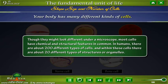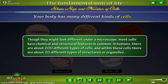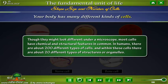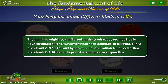Though they might look different under a microscope, most cells have chemical and structural features in common. In humans, there are about 200 different types of cells, and within these cells there are about 20 different types of structures or organelles.